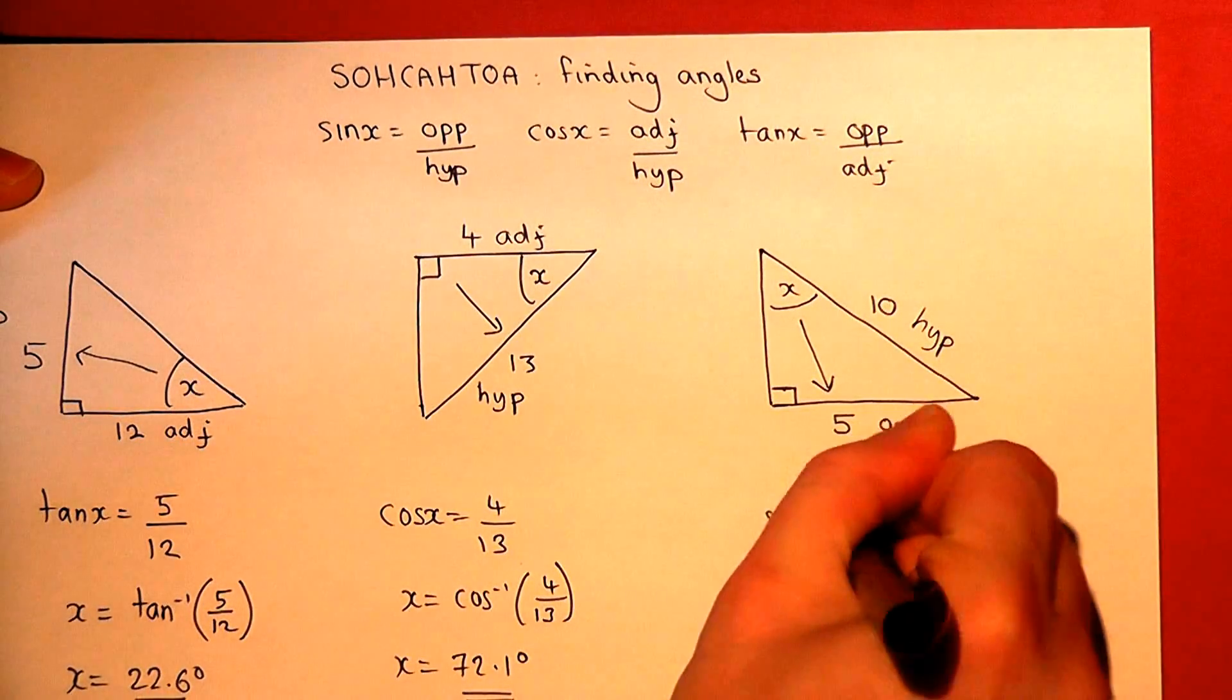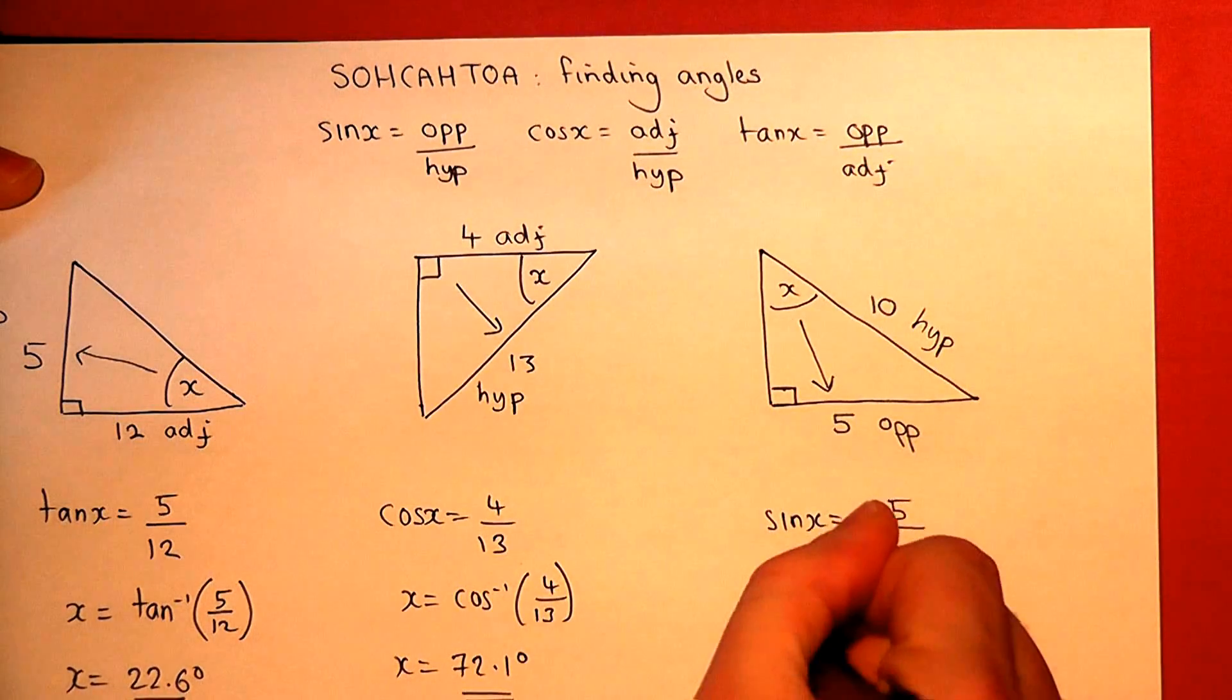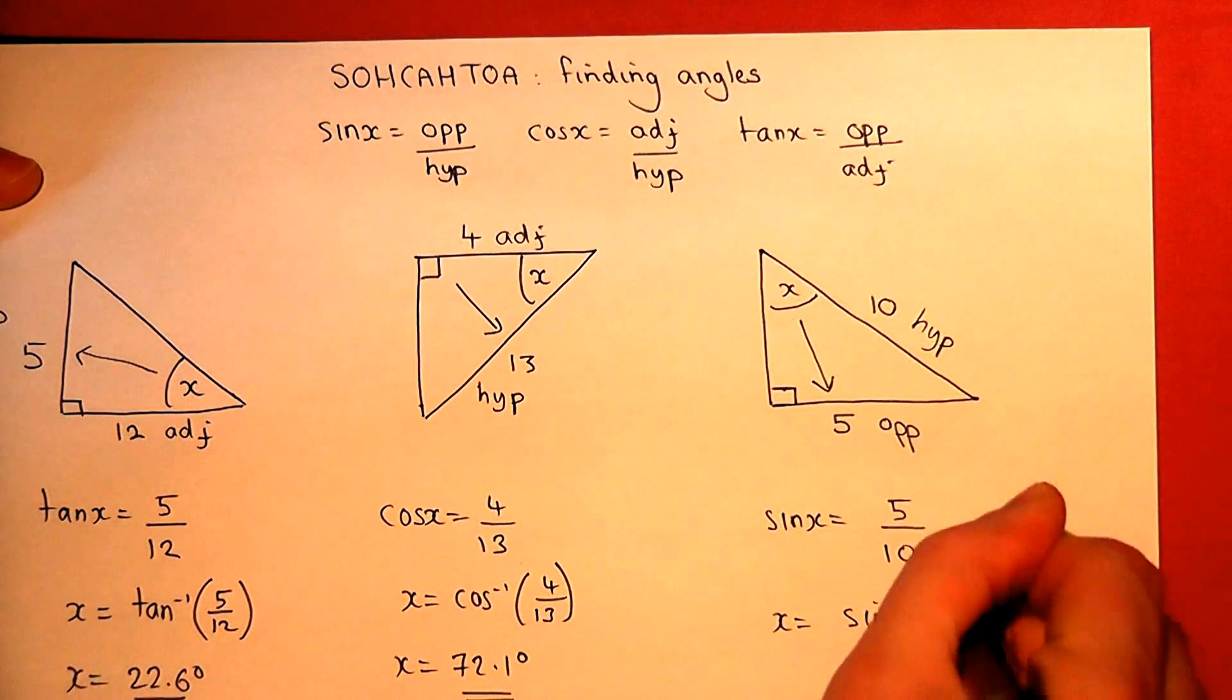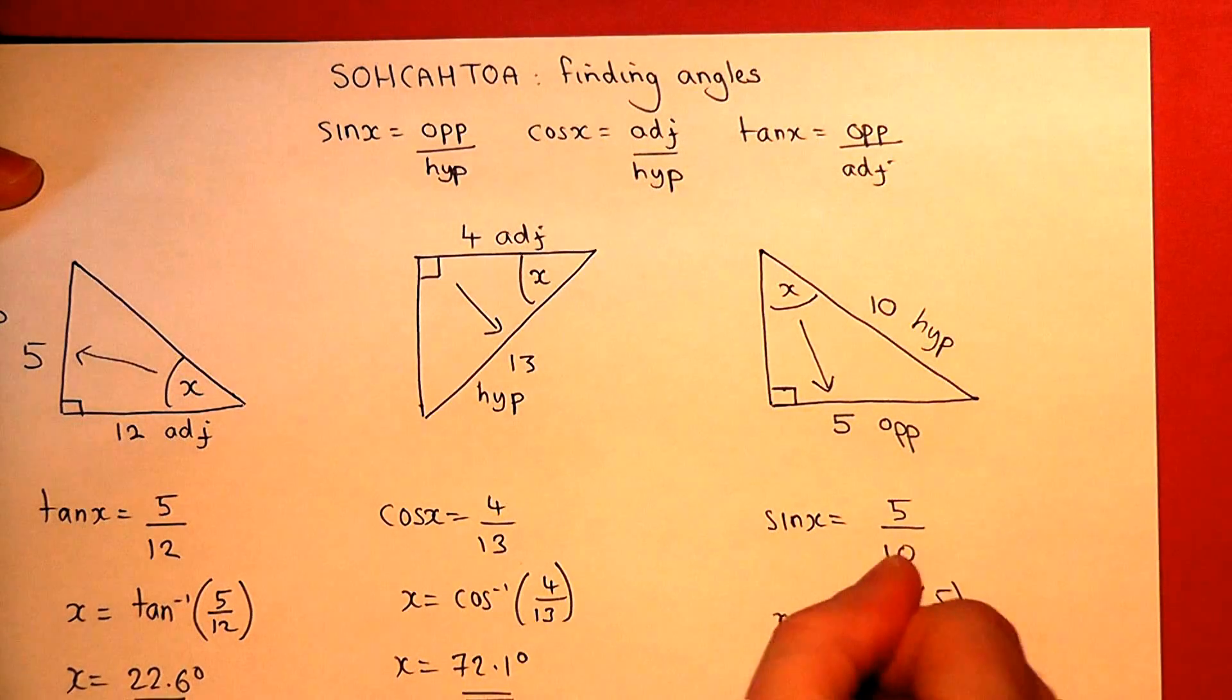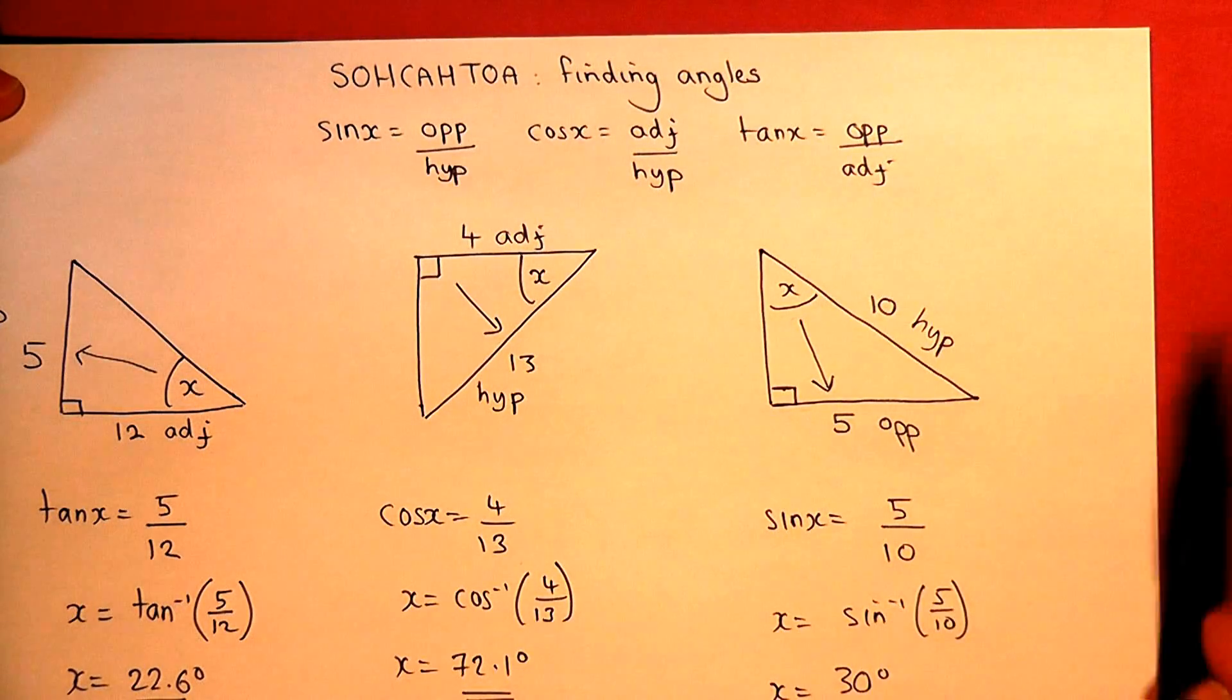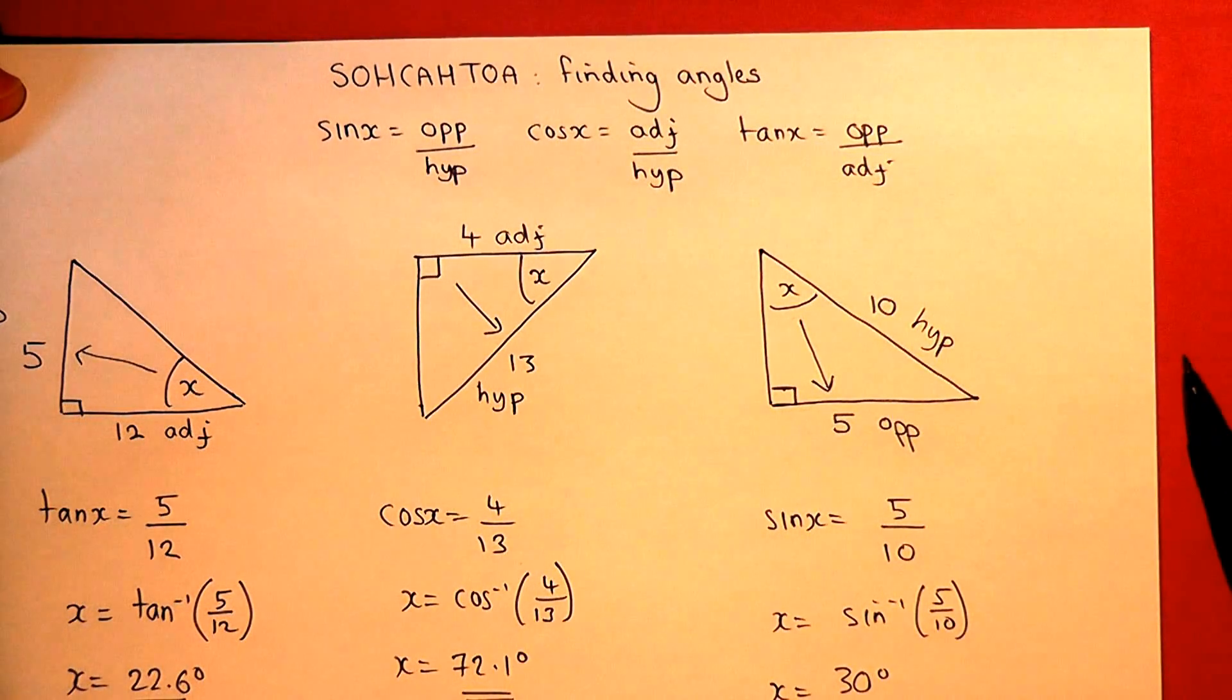So sine of x equals opposite over hypotenuse. So to find x, we do the inverse sine of 5 over 10 or a half. So we get x equals 30 degrees. So there we go. That is how to use sine, cos, and tan to find missing angles.